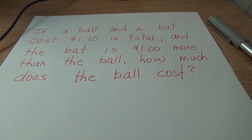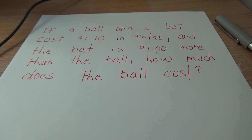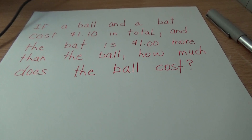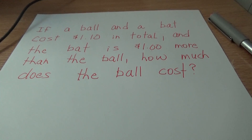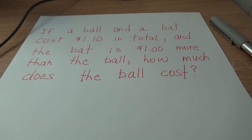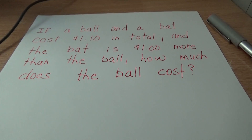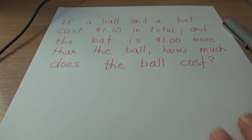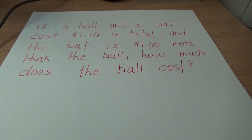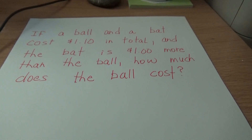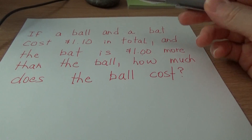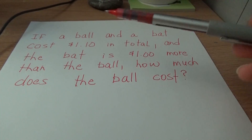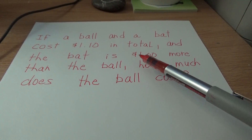Now, some people said, well, obviously the ball costs ten cents, because if the bat is a dollar, there's ten cents left, so that's the cost of the ball — because a dollar plus ten cents is a dollar ten. But that isn't correct, because the problem doesn't state that the bat is a dollar.